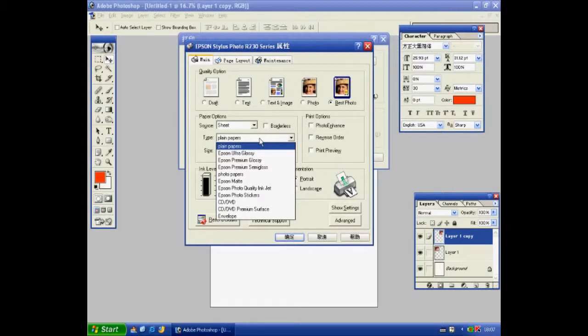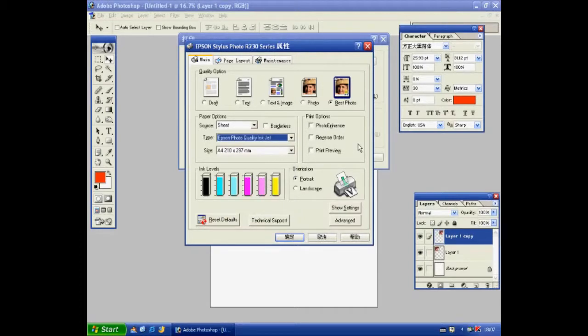Then, click the Advanced button and cancel the high speed. On page layout, choose mirror print. Click to print.